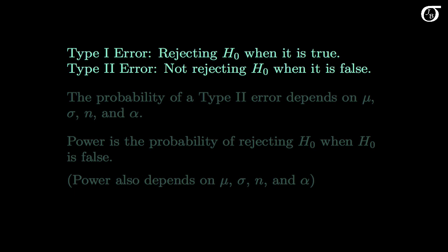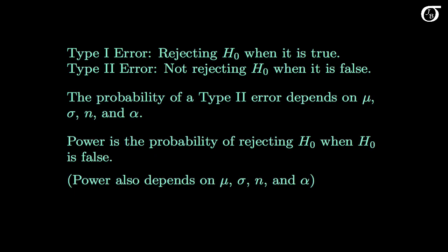Recall that a type 1 error is rejecting the null hypothesis when it is true, and a type 2 error is not rejecting the null hypothesis when it is false. For the z-test we're discussing today, the probability of a type 2 error depends on the hypotheses, as well as mu, sigma, n, and the choice of the significance level alpha. We often call the probability of a type 2 error beta.